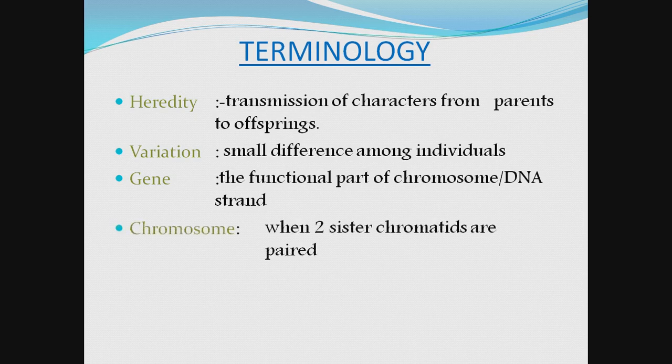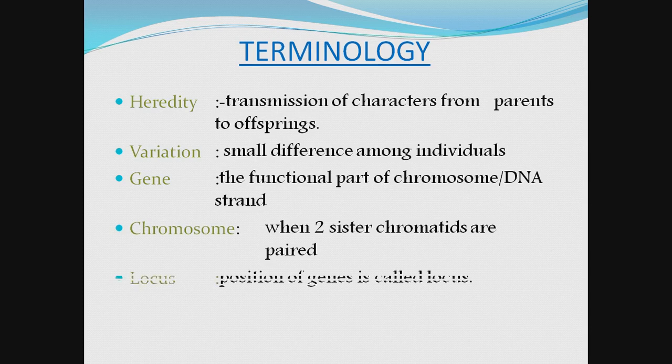What is a gene? The functional or expressional part of the chromosome or DNA strand is called a gene. Where are genes present? Genes are present on chromosomes. What is a chromosome? When two sister chromatids are paired, it is called a chromosome. The location on the chromosome where a gene is found is called a locus.